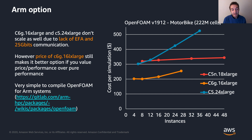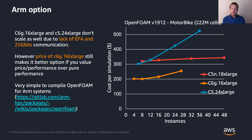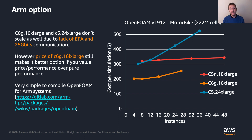This is why we wrote the blog post — to highlight the fact that if you're running OpenFOAM, you should absolutely consider the C6G, or the M6G if you need higher memory, or the R6G to run your OpenFOAM cases. We really feel that you can get a very similar performance — maybe not as fast — but you can get a really good cost per simulation, and for many people this is actually the most important thing.